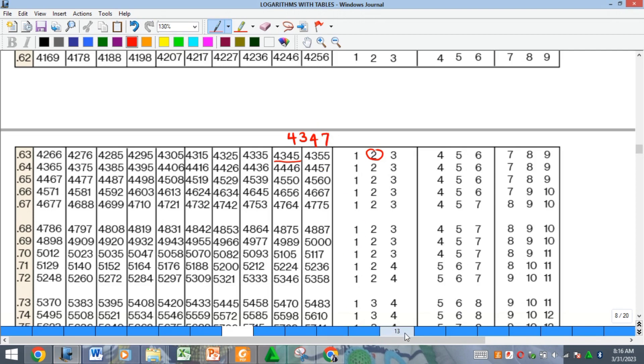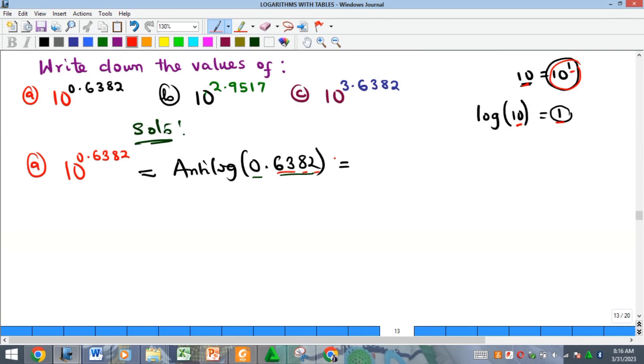So that's the number we have, 4347. So that means the antilog here is 4347. And then we'll now make use of the characteristic to get our position of decimal point. So just add one to this, and zero plus one is one, so just count the first digit and then put your decimal point. So it means that 10 raised to the power of this number is going to give us 4.347.